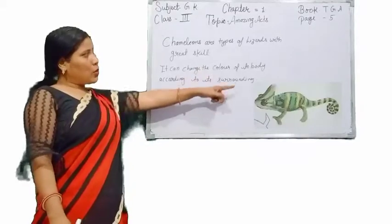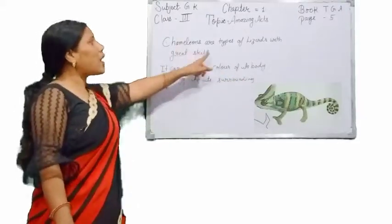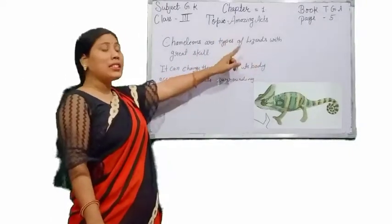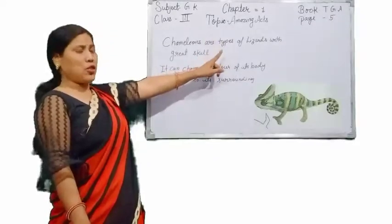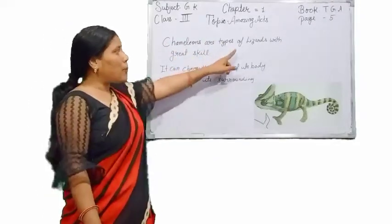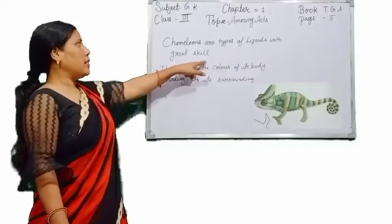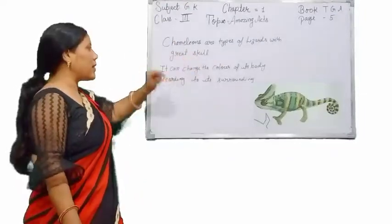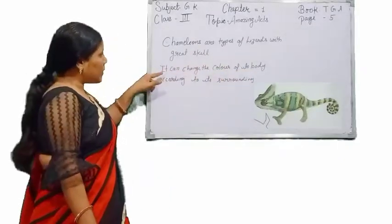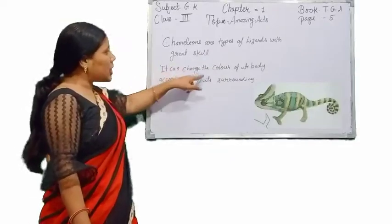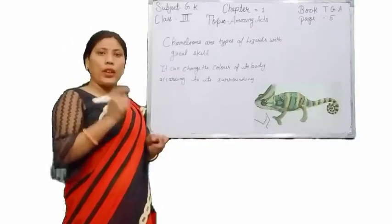So students, here you can see the picture of a chameleon. Chameleons are a type of lizard. You see many lizards on the walls of your house and in many places, but chameleons are a special type of lizard with great skills. They have a special characteristic. They can change the color of their body according to their surroundings.